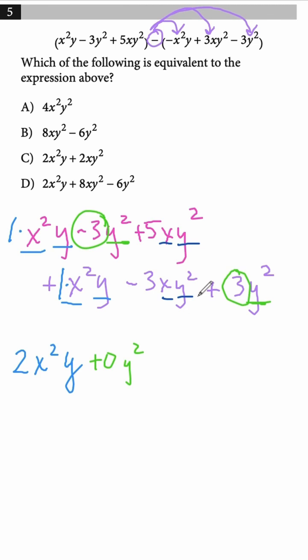Lastly, we have xy squared. There's a 5xy squared and a negative 3xy squared. Together, that makes 2xy squared. So our final answer is 2x squared y plus 2xy squared.